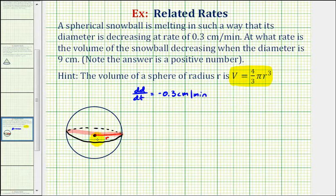Since the radius is half the diameter, this means dr/dt, the change in the radius with respect to time, would be half this, or negative 0.15 centimeters per minute.